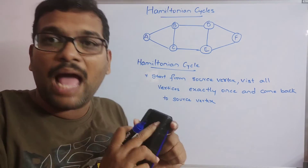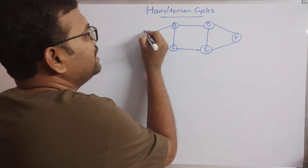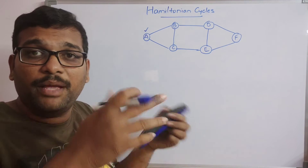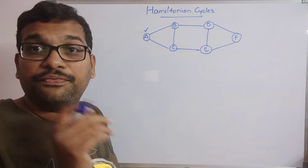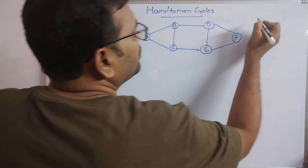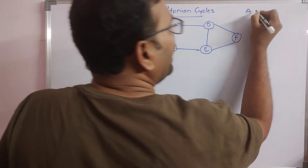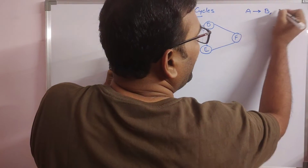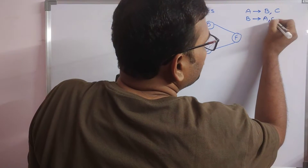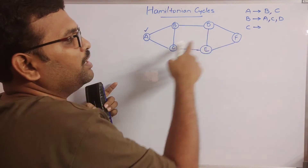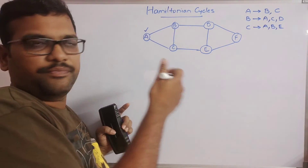So how can we find all Hamiltonian cycles? We start with the source vertex — don't change the source, because if you change it the cycle may be equivalent. Fix the source vertex and find out all feasible paths. I'll write the outgoing edges of every vertex. For example, vertex A has outgoing edges to B and C. Vertex B has outgoing edges to A, C, and D.